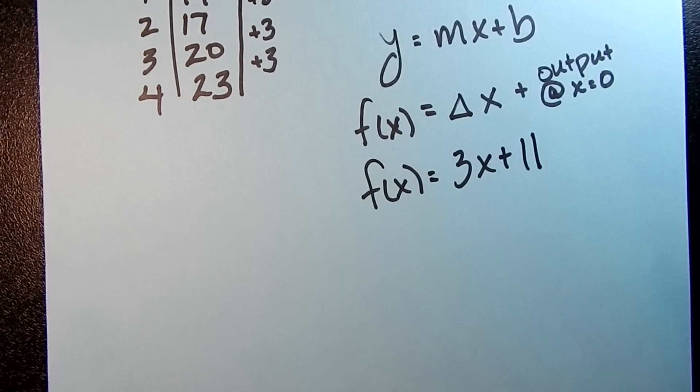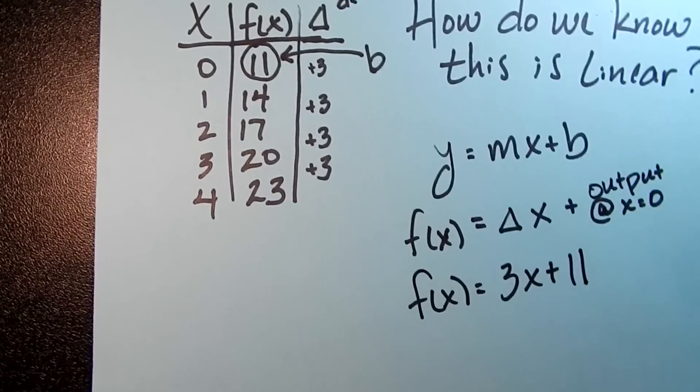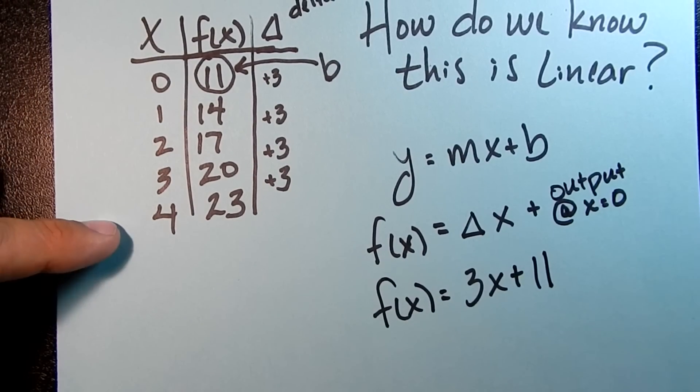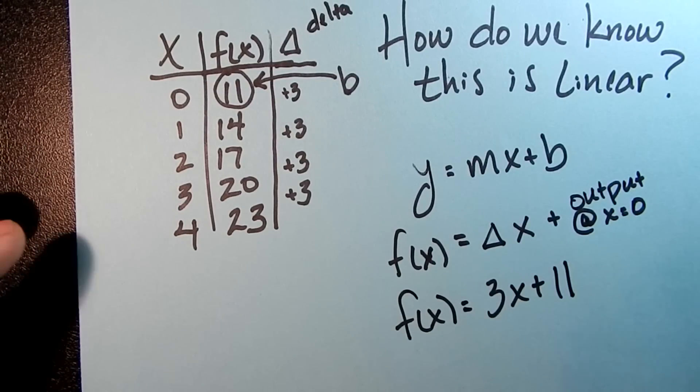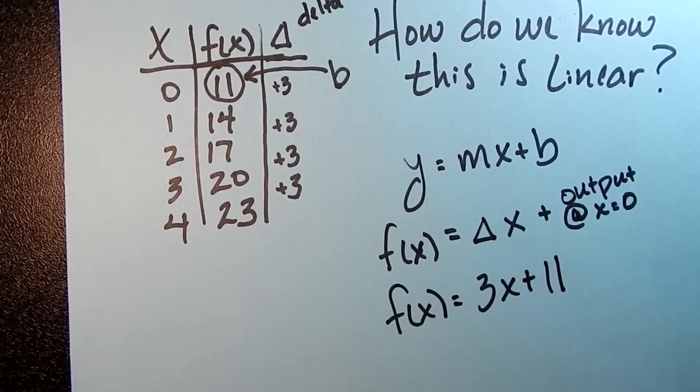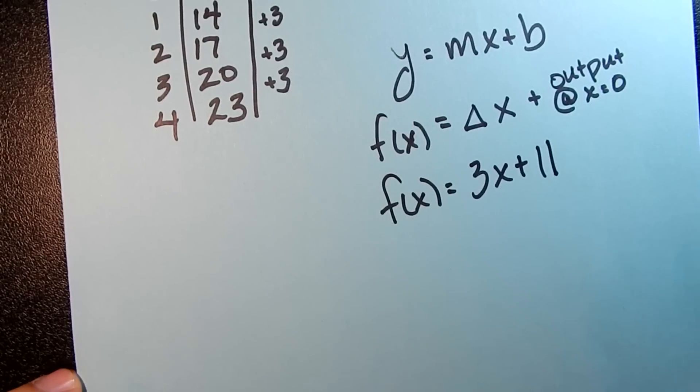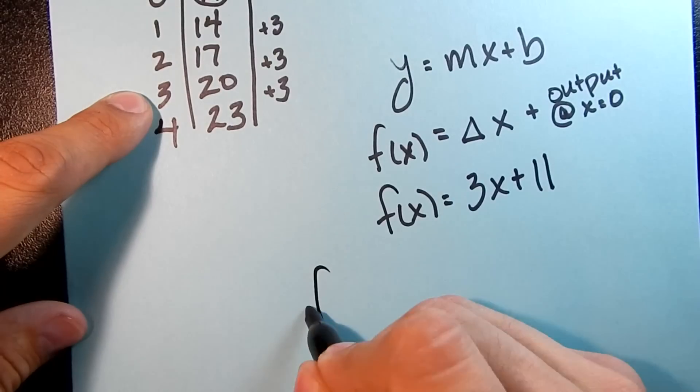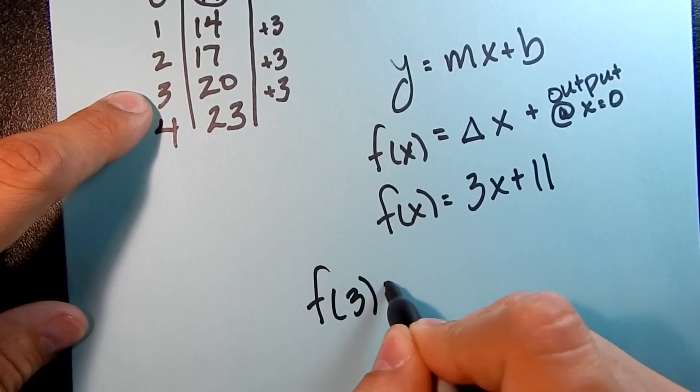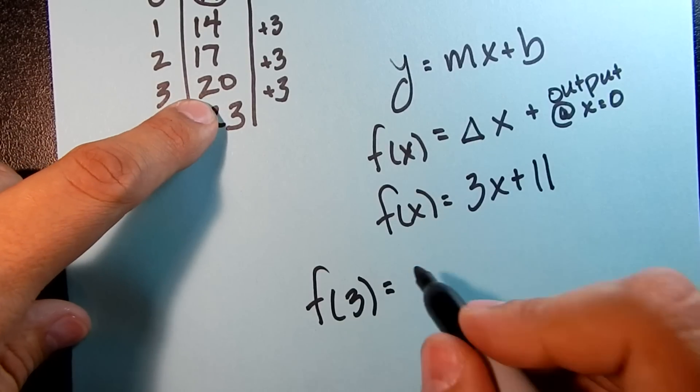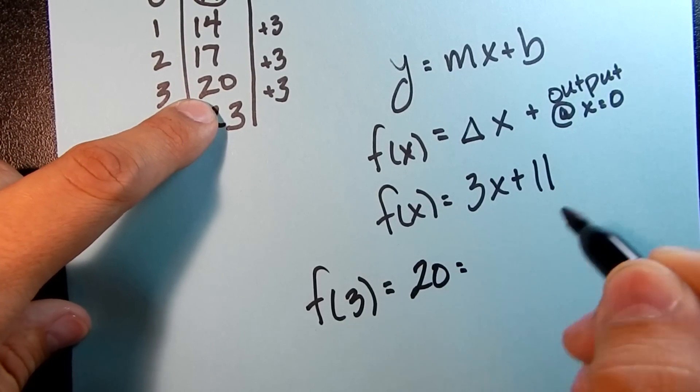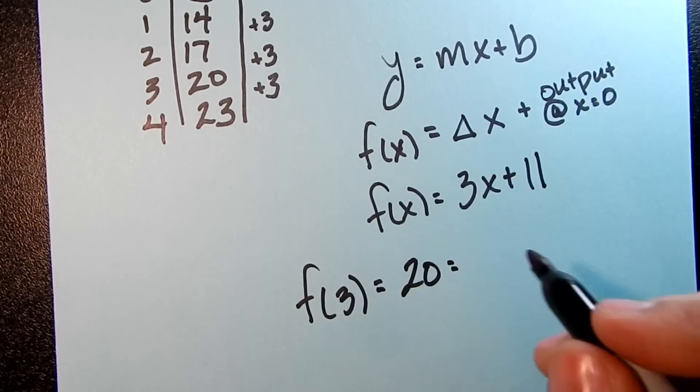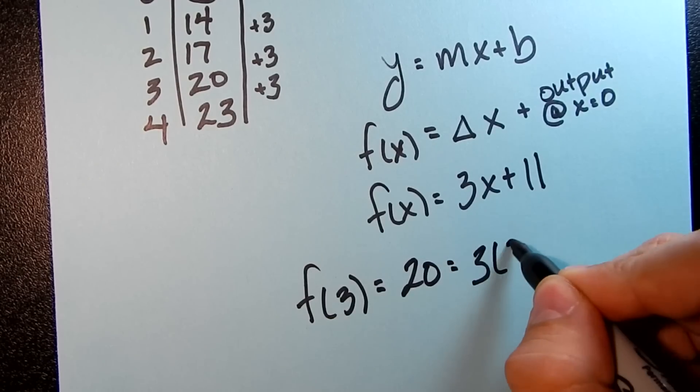Now, if we wanted to check this to make sure that it works, we can try some of these values. So you don't have to do this, but this is kind of insurance to make sure that you're right. So one way that we could check this is put in some numbers. So how about f(3)? We know what f(3) is. It's 20. So in this case, we're just going to check it and see if it's right.